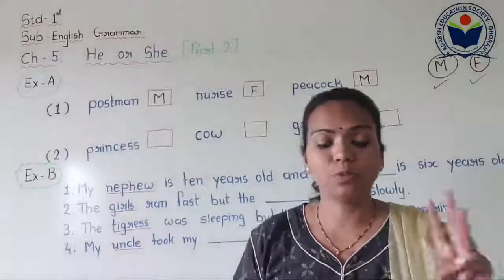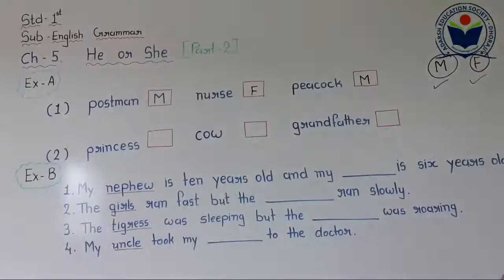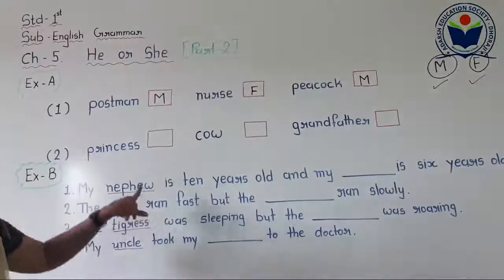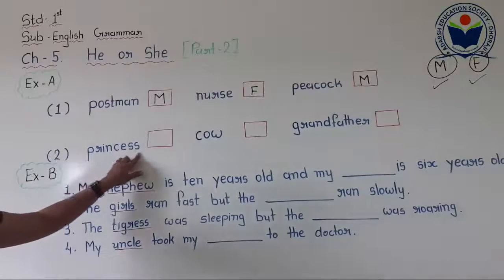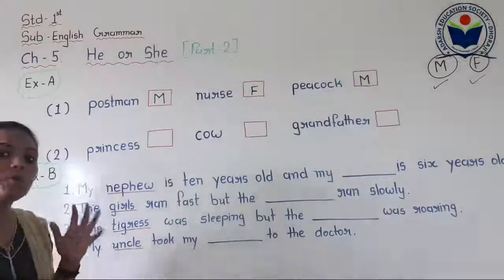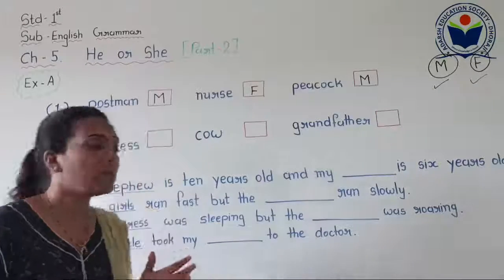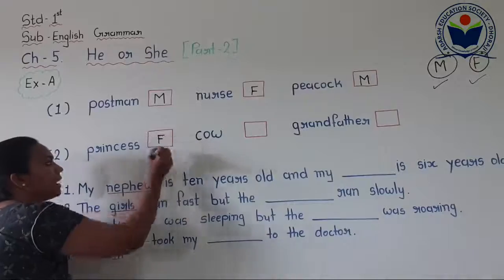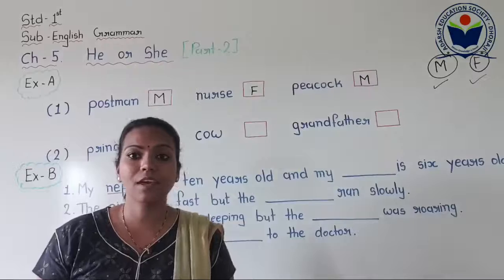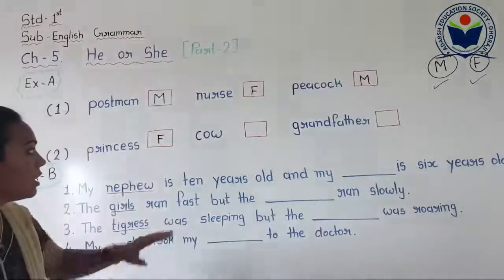On page 29 there are three pictures: princess, cow, and grandfather. Princess — P-R-I-N-C-E-S-S. Can you tell me? Is the naming word princess used for male or female? You will say female, so we have to write capital F here. It is a very nice exercise — we can identify male and female clearly.